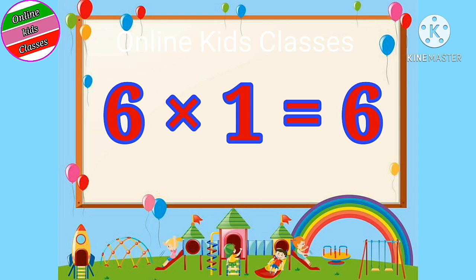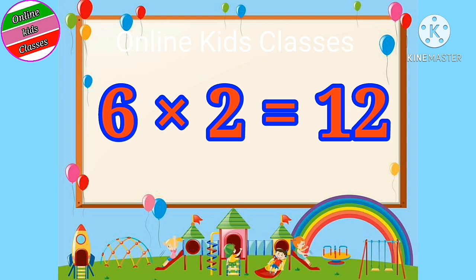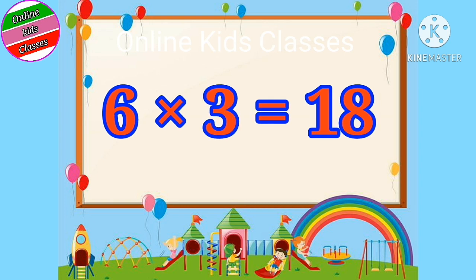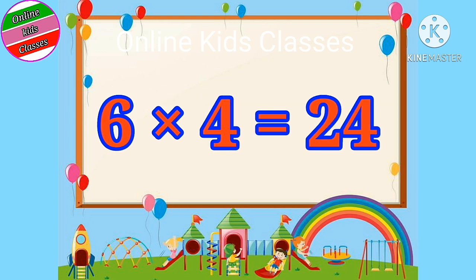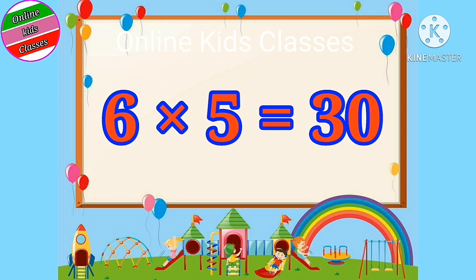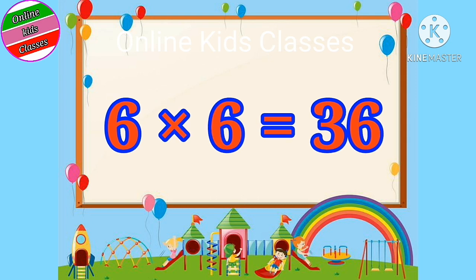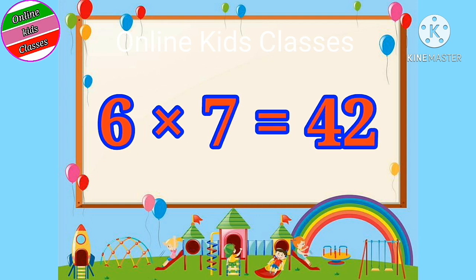Six ones are six. Six twos are twenty-four. Six threes are eighteen. Six sixes are thirty-six. Six sevens are forty-two.